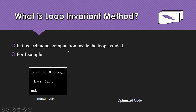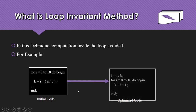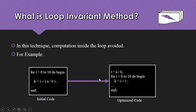The loop invariant method is a technique where we avoid recomputing a value inside the loop. For example, we take a variable t and compute the value of a divided by b outside of the loop, then call the variable inside the loop — so the computation inside the loop is avoided.